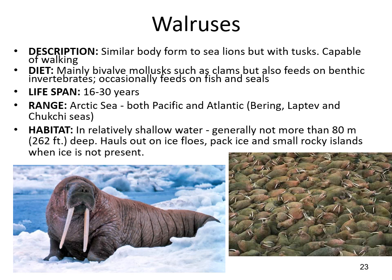Walruses are in their own group with a similar body form to seals and sea lions but with giant tusks. They are capable of walking, similar to sea lions. They mostly eat mollusks such as clams and oysters, but can also eat seals. They live to about 30 years and live only in the Arctic sea in shallow water where they can find bivalves.